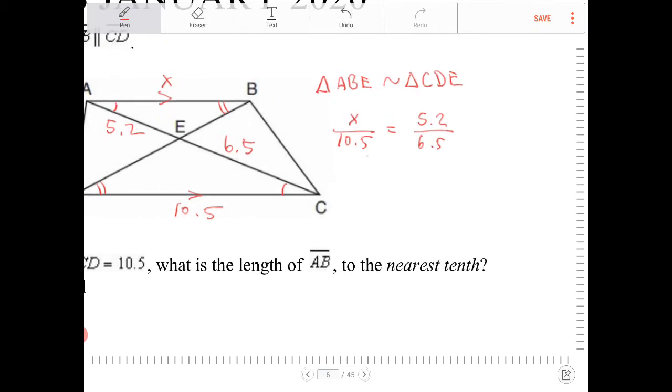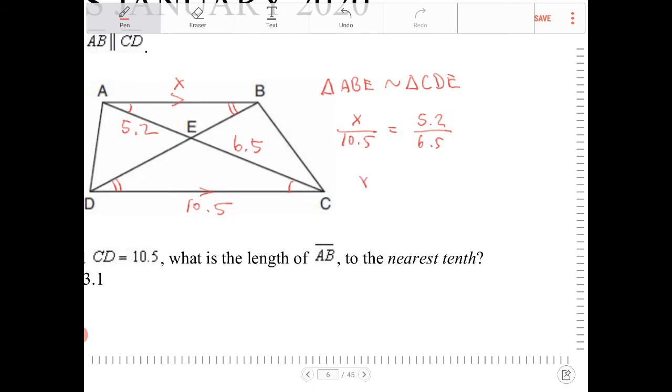So, anyway, so we're going to cross-multiply to figure out what X is. So, X will equal 5.2 over 6.5 times 10.5.